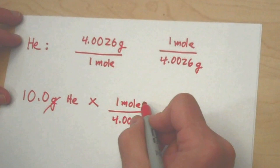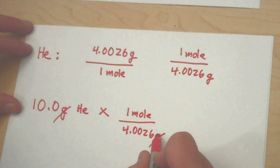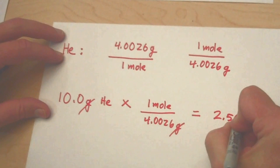So all we have to do then is take 10 grams divided by 4.0026. And the answer works out, rounding up, to 2.50 moles.